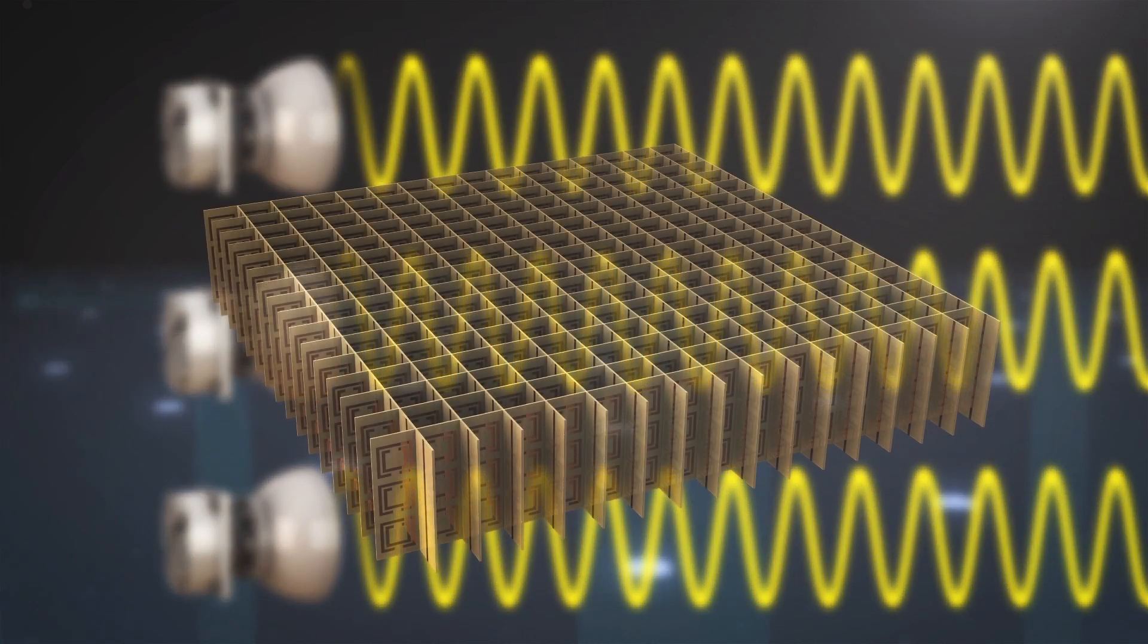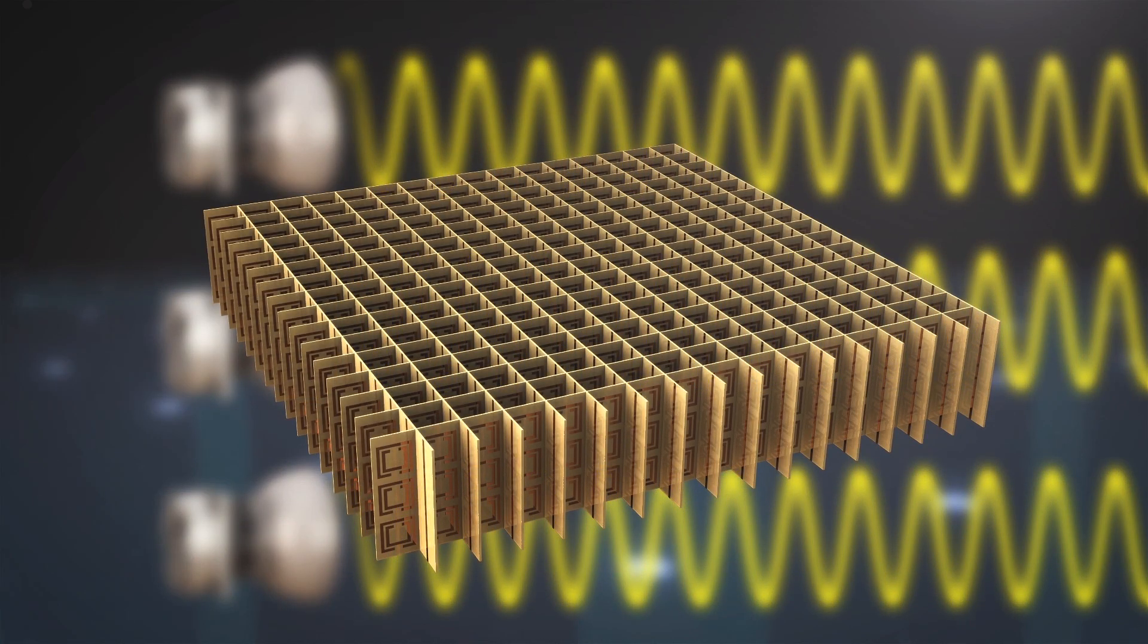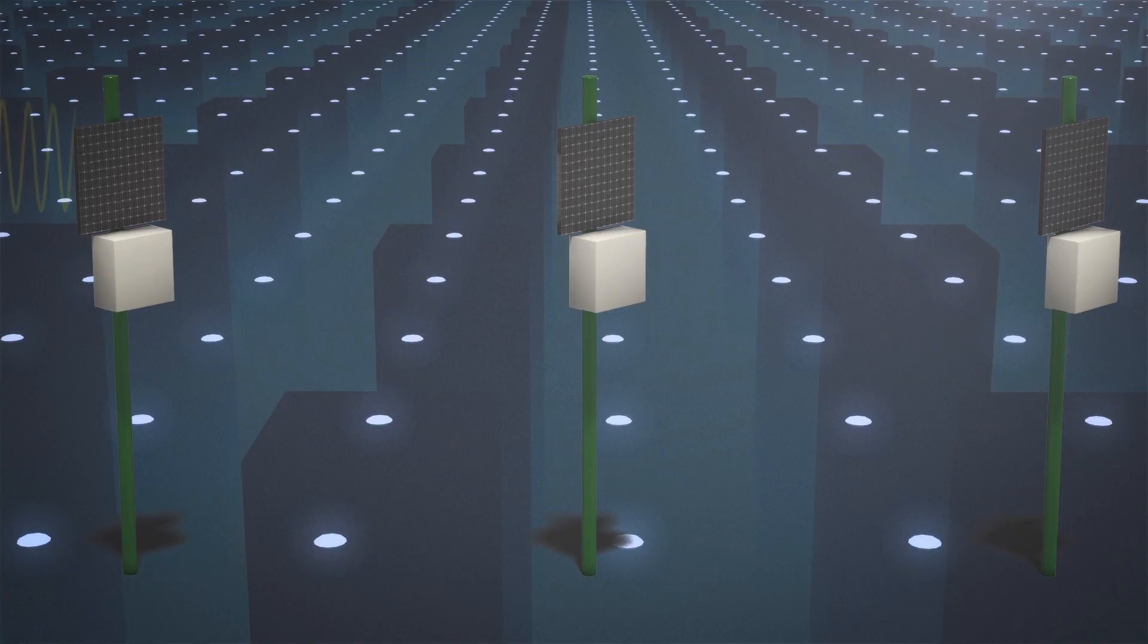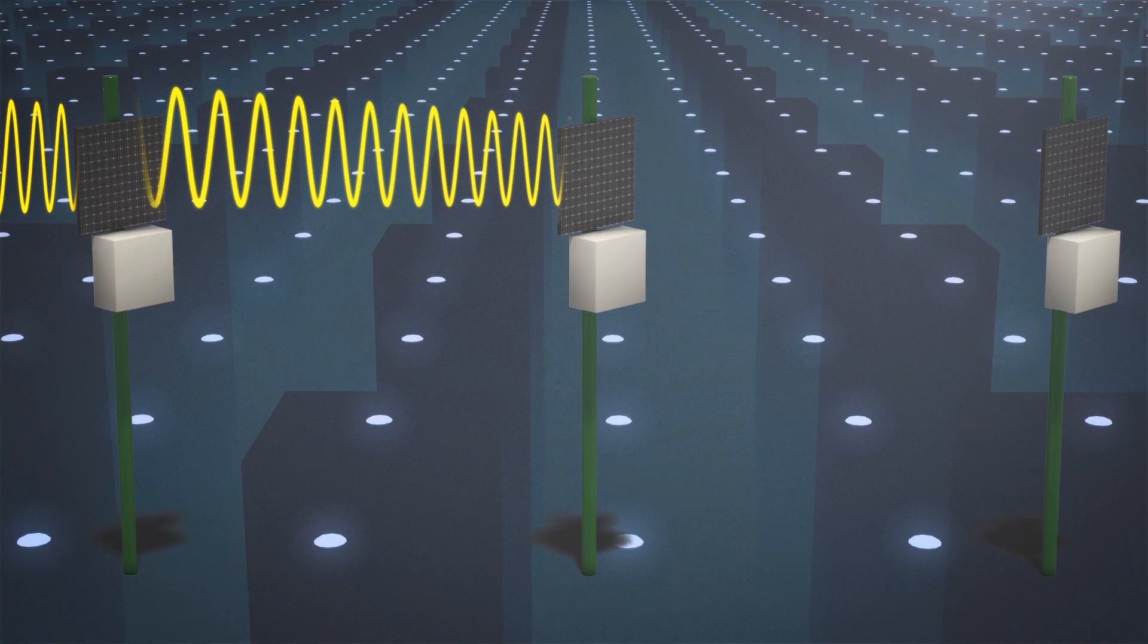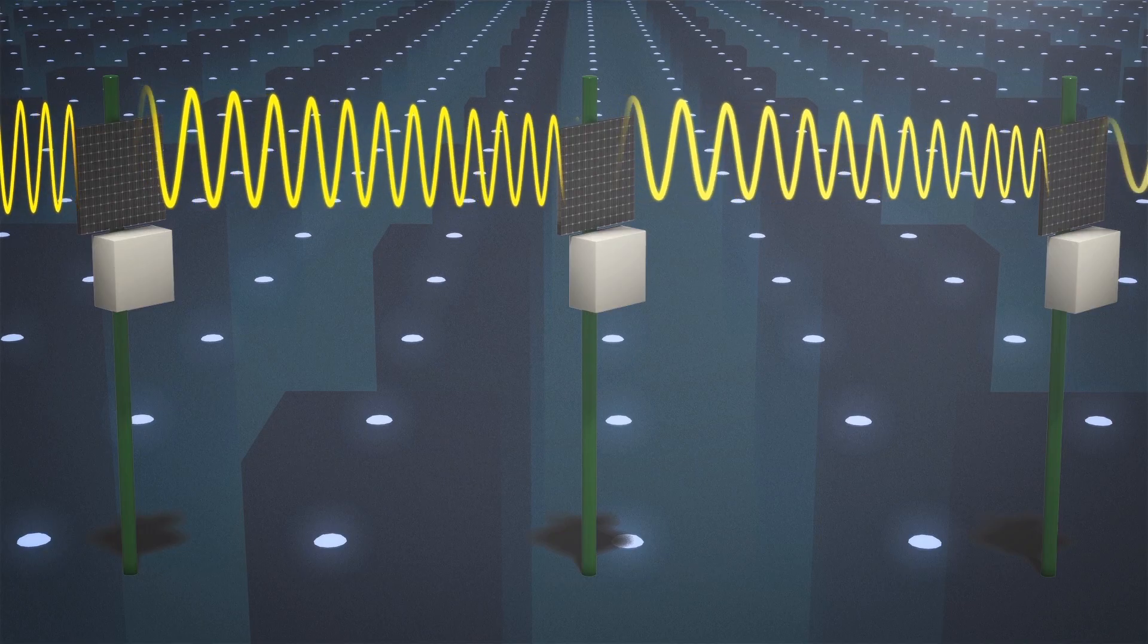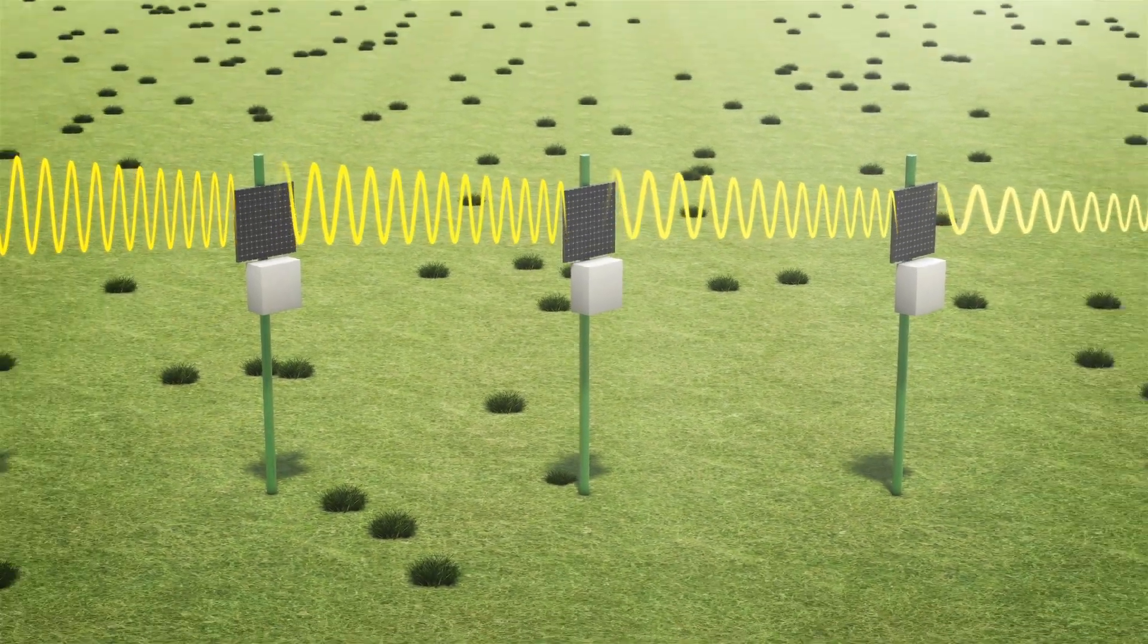Secondly, the grid uses engineered metamaterials with tiny patterns that effectively interact with these microwaves. A transmitting antenna sends the beam through various relay panels to a rectenna that transforms the radiation back into electricity.